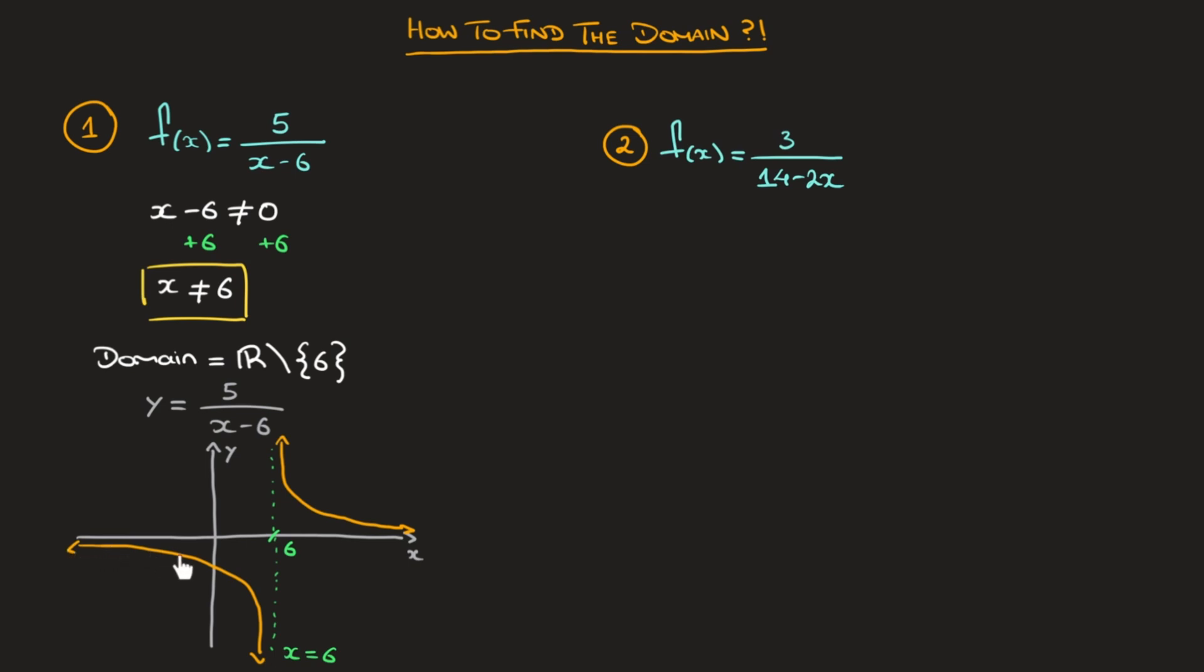On the other hand, the curve is perfectly well-defined for every single other value of x there is. And we can see that here because the curve goes on forever on either side of that vertical line. And that confirms this function's domain. x can be absolutely any number except for 6. Now, vertical asymptotes like the one we have here will always be seen at a value of x at which the denominator would equal 0. And in fact, we'll see that again in the second example here.